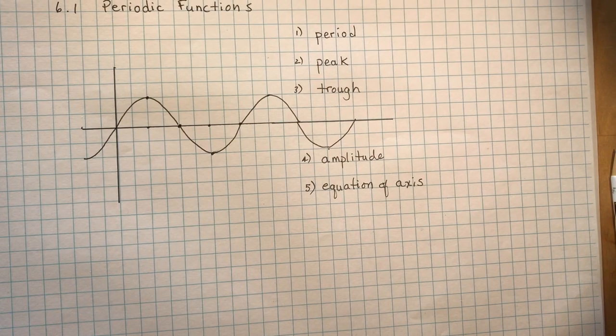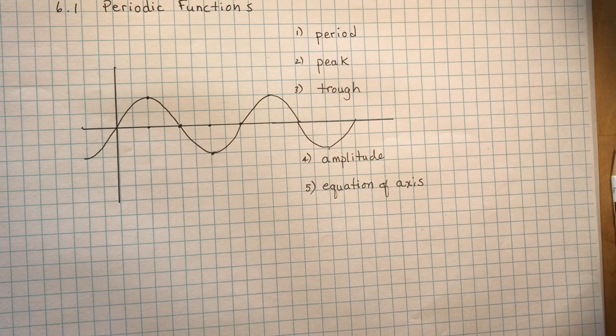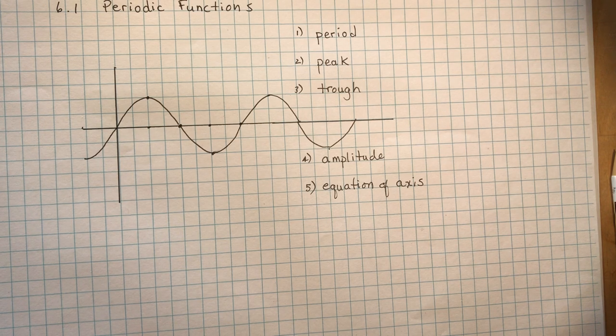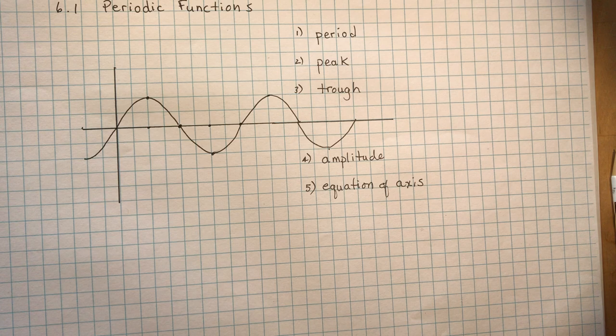6.1 is called periodic functions. Now periodic functions are not necessarily sinusoidal functions, which is the name of chapter 6. So they start with what a periodic function is by discussing what the period is.